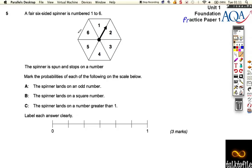We've got a fair-sided spinner here, six different sections, they're all the same size, so equally likely. The spinner stops on a number and we've got to mark the probability. The spinner lands on an odd number.